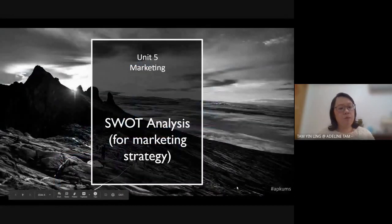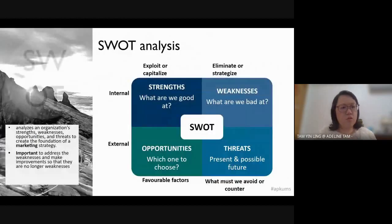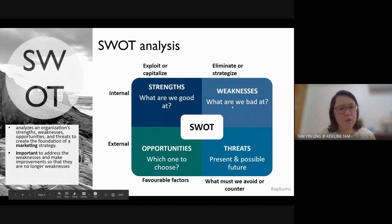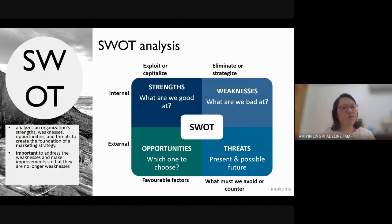Before we do marketing, before we go for a marketing strategy, we have to know how to do a simple analysis of the internal and external environment. This analysis we call SWOT analysis. SWOT analysis stands for strengths, weaknesses, opportunities and threats. SWOT analysis is used to analyze an organization's internal environment — the strengths and weaknesses — as well as the external environment — the opportunities and threats — to create the foundation of a good, effective marketing strategy.